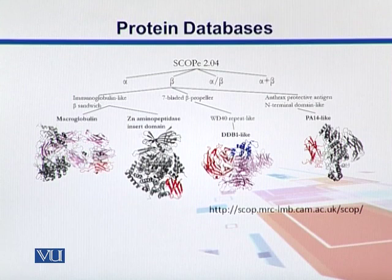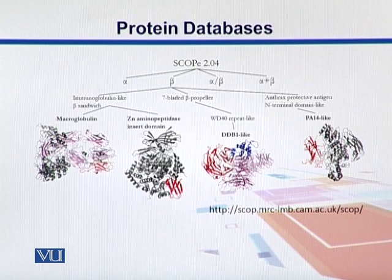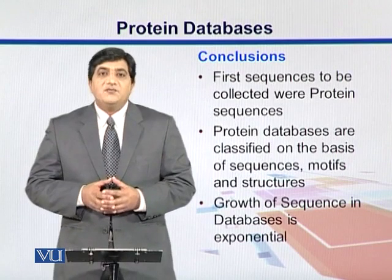For example, in the alpha class we have all proteins that contain alpha helices. We can also have an all-beta class. In the alpha/beta class, alpha helices and beta strands alternate one after another. Whereas in the alpha plus beta class, we have separate regions where alpha helices are stacked together and beta strands are stacked together in distinct regions.